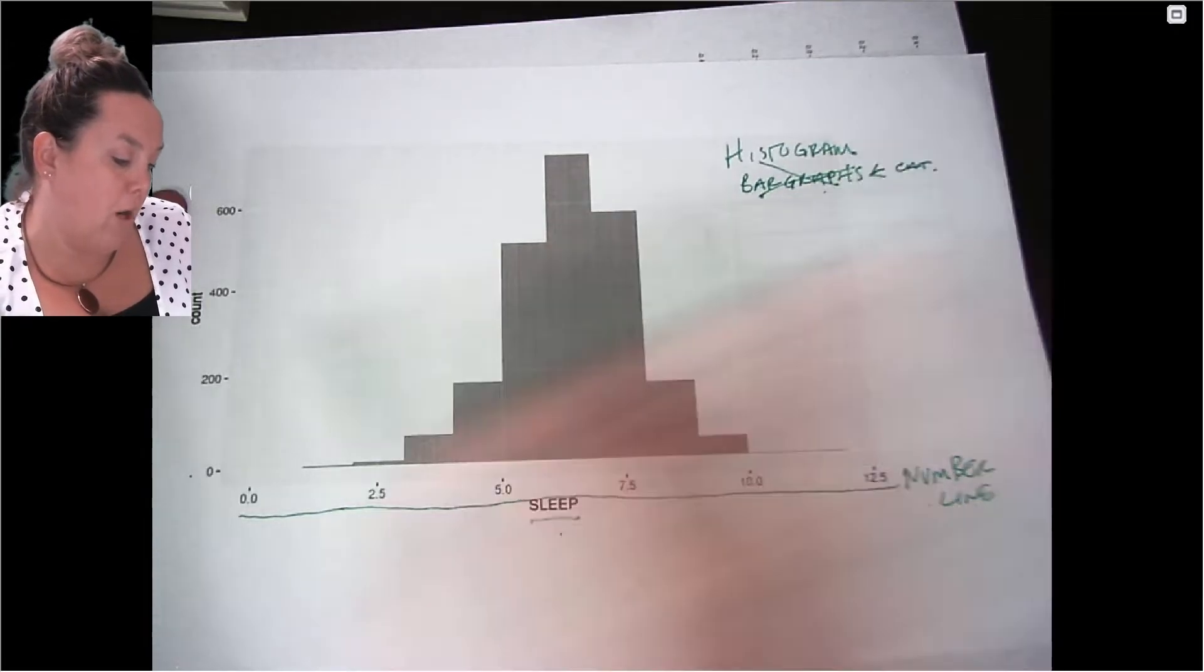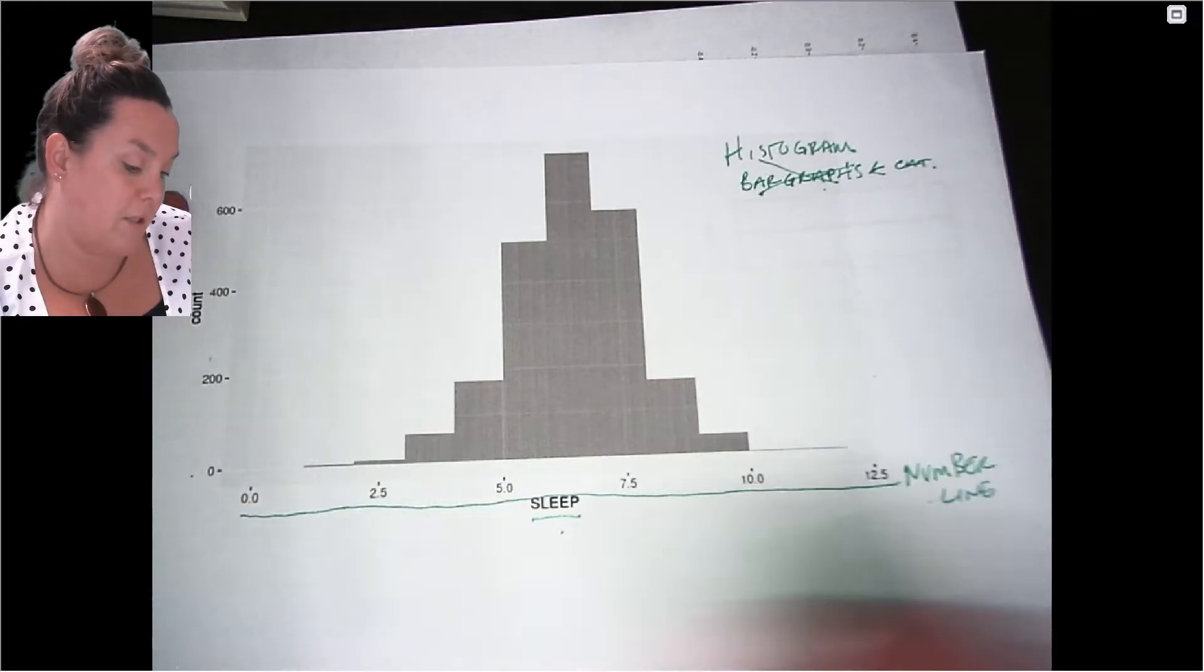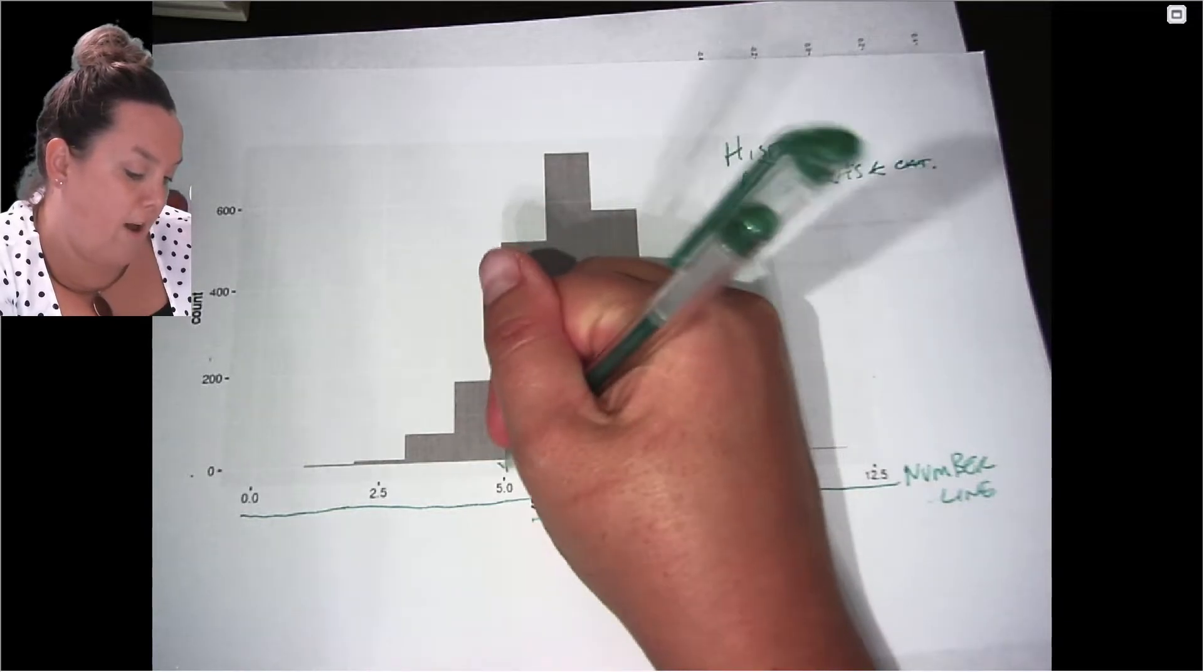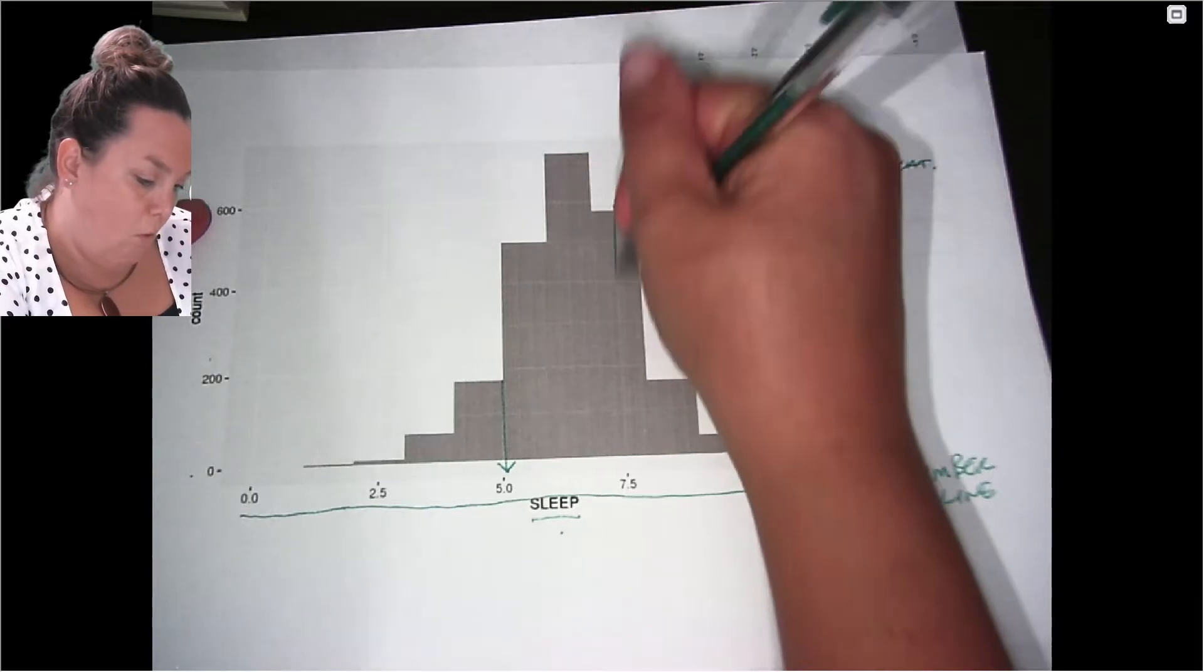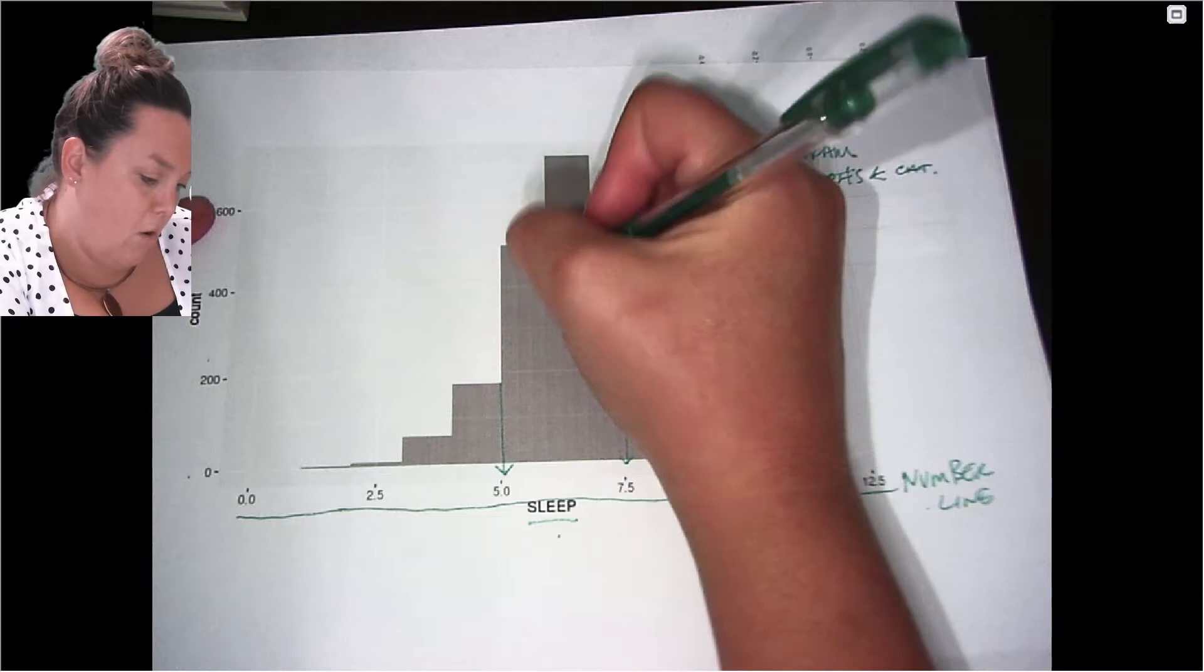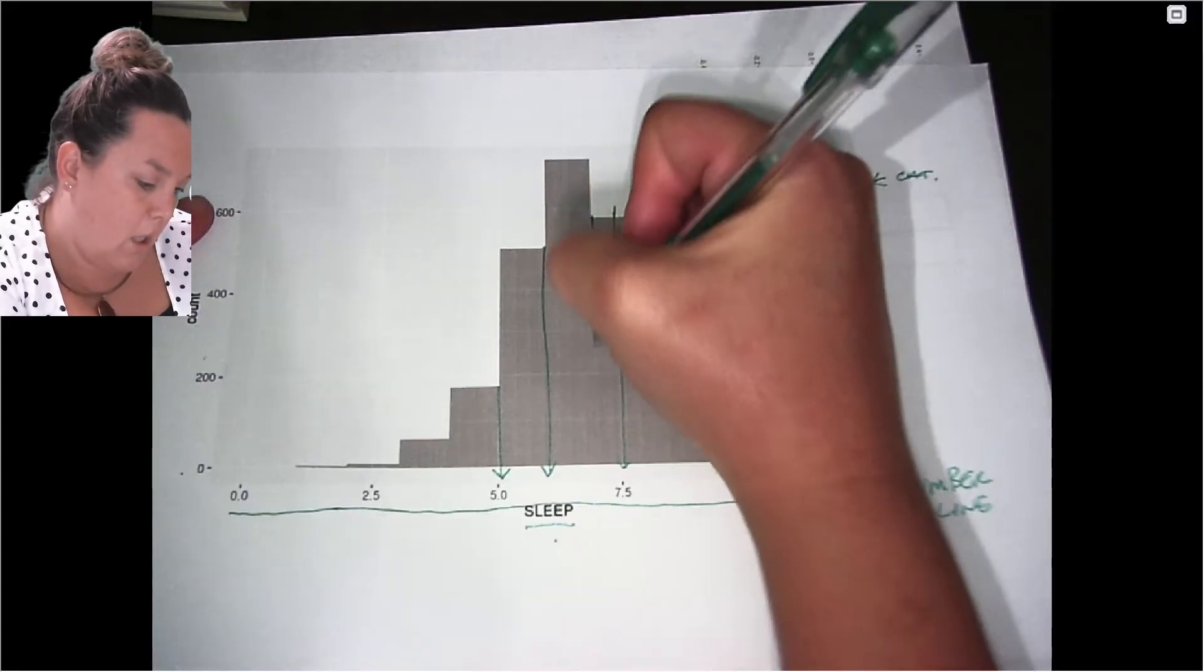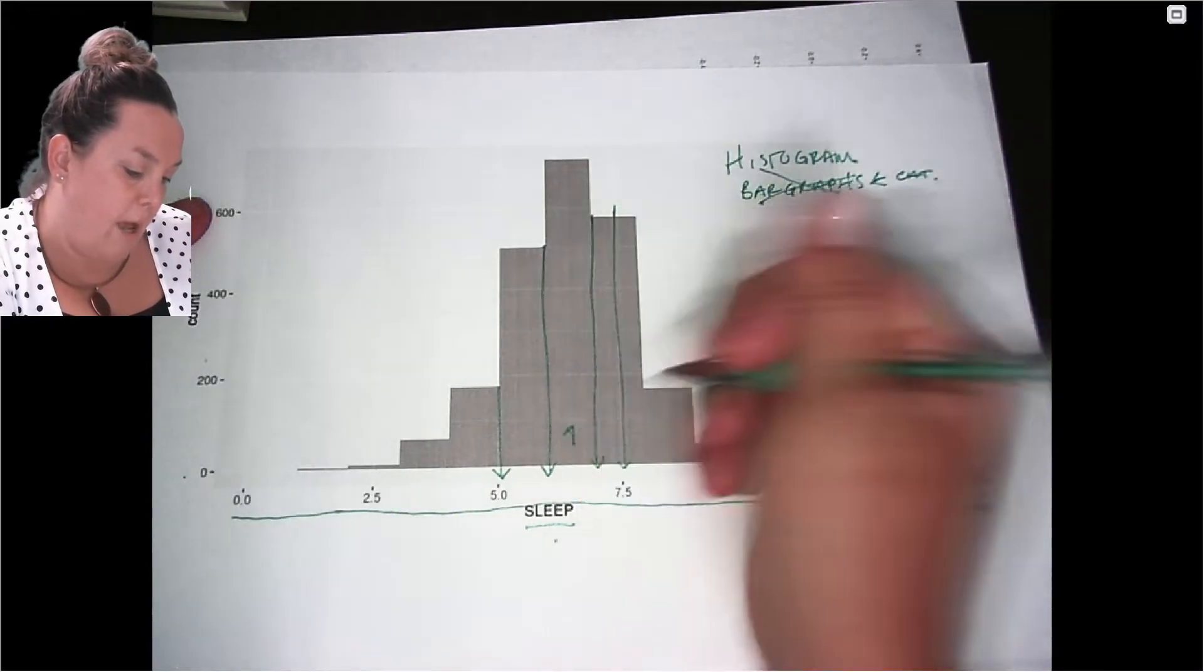It is similar to a bar graph in that the y-axis is giving you a count of how many individuals are in each group. So this is the start of five hours of sleep per night. This appears to be the cutoff for seven and a half hours of sleep. So it looks to me like this bar here that's the tallest would be seven hours.